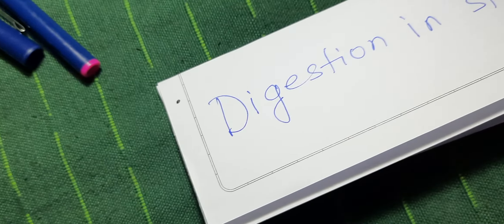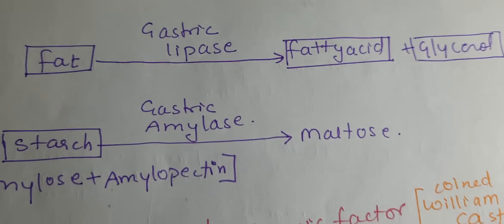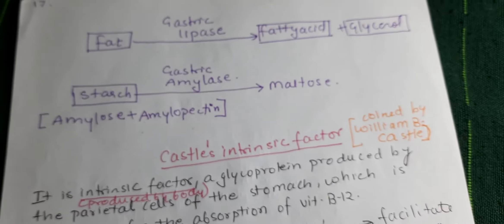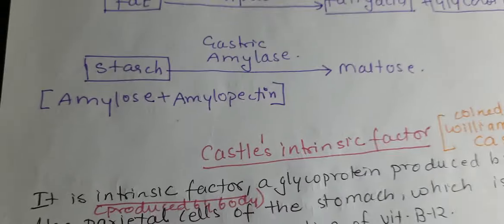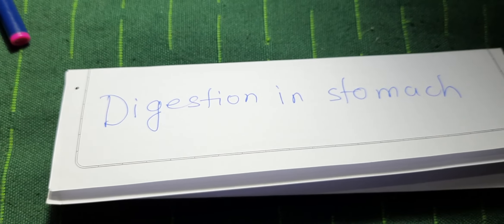Gastric lipase acts on fat and converts it into fatty acids and glycerol. Gastric amylase acts on starch and converts it into maltose. This completes our discussion of digestion in the stomach. In the next portion, we will discuss Castle's intrinsic factor. Thank you.